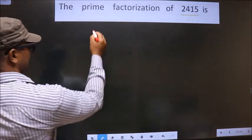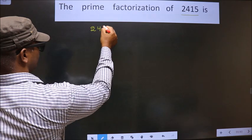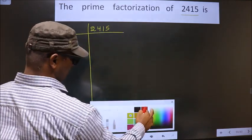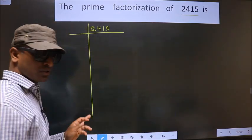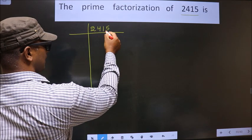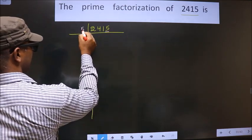See, that is 2415. For this number, the last digit is 5, so we take 5 here.